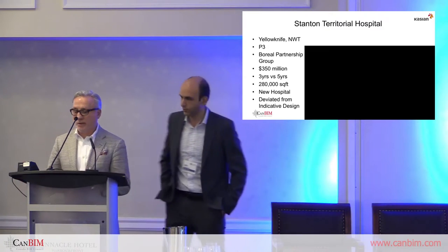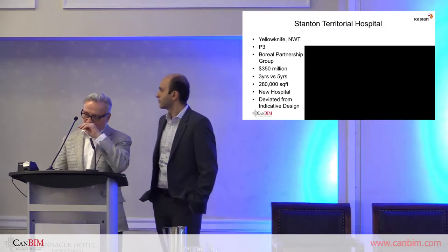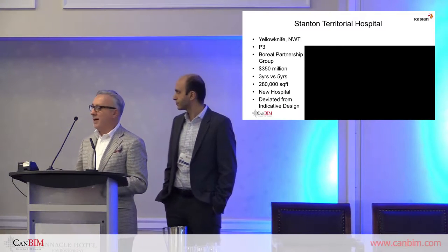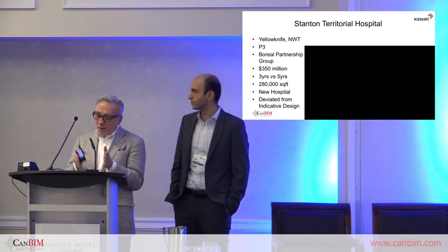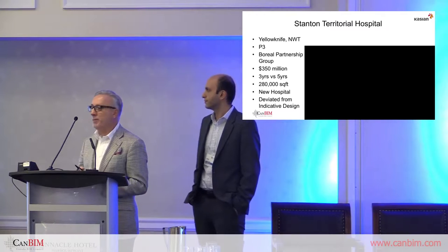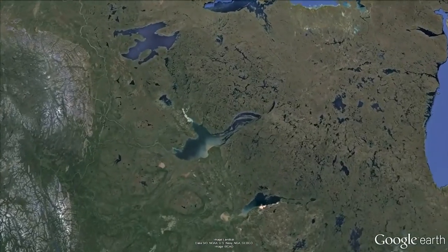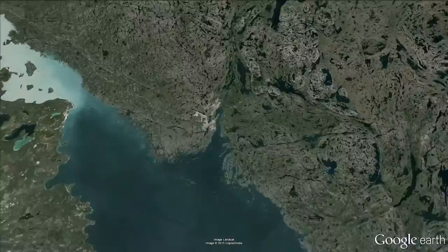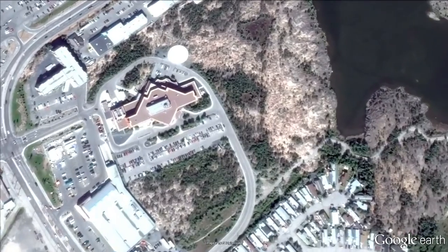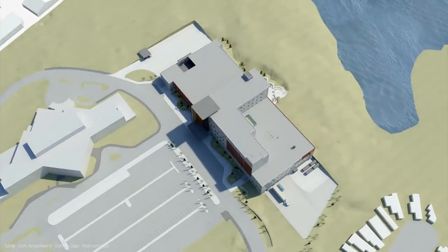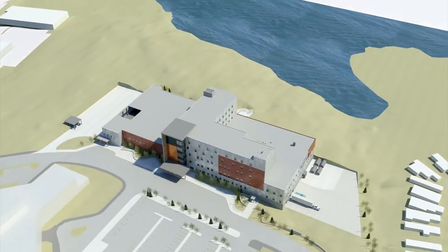Thank you, Amir. I want to give you an overview of Stanton Territorial Hospital. It's a hospital, yes, but the project delivery is slightly different — it has different requirements and they're all data-heavy, on top of the normal data requirements for a hospital. The hospital is in the Northwest Territories in Yellowknife. It's a P3 — public-private partnership — and we're part of the Boreal partnership group that consists of Bird, Clark, and Turner Construction Group, and Carillion FM Management. The total project cost is $350 million.